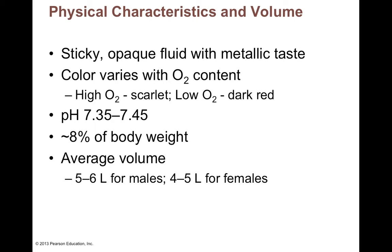The normal pH of blood is 7.35 to 7.45. We already talked about the three lines of defense for pH regulation: the first is buffers like bicarbonate, the second is your respiratory system where you can breathe out CO2, and the third is your kidneys. Your kidneys can handle acids and bases to keep you within that narrow range of blood pH. On average, blood accounts for about 8% of your body's weight, with an average blood volume of about 5 liters — 5 to 6 liters for males, 4 to 5 for females.